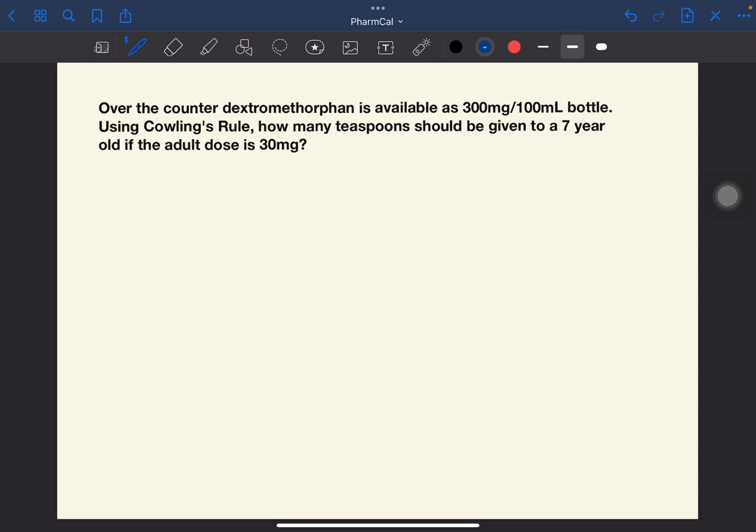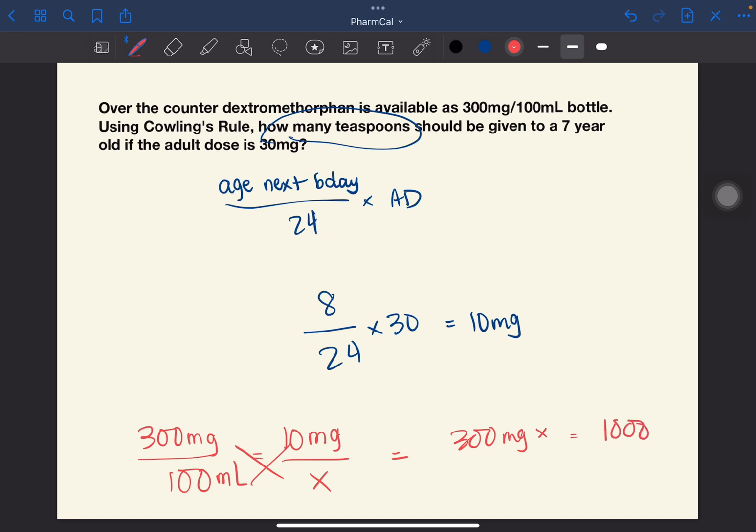Over-the-counter dextromethorphan is available as 300 mg per 100 ml bottle. Using Cowling's rule, how many teaspoons should be given to a 7-year-old if the adult dose is 30 mg? We will use Cowling's rule: age next birthday over 24 times the adult dose. This will be 8 over 24 times 30, which equals 10 mg. However, the question asks how many teaspoons, so we will use dimensional analysis. 300 mg per 100 ml equals 10 mg, which equals 3.3 ml. However, the question asks for teaspoons, and 1 teaspoon is 5 ml. So the answer is 1.5 teaspoons.